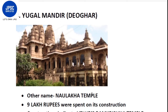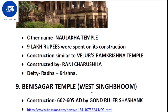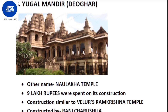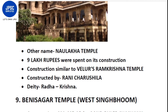The next temple is the Yugal temple, located in Deoghar district. Its other name is the Naulakha temple - it is called so because 9 lakh rupees were spent on its construction. The construction style is similar to Belur's Ramakrishna temple in West Bengal. It was constructed by Rani Charushila. The deity worshipped here is Radha and Krishna.